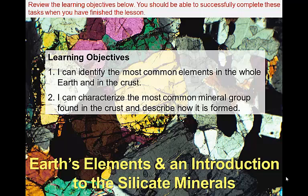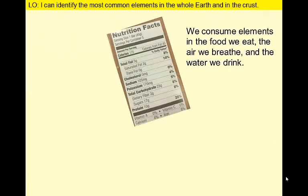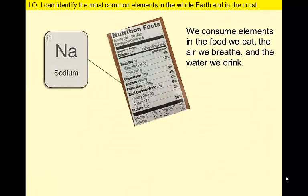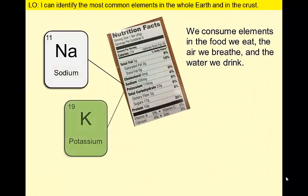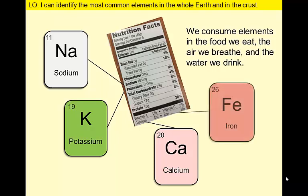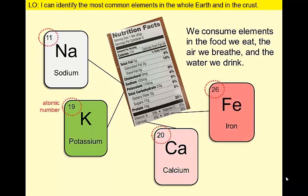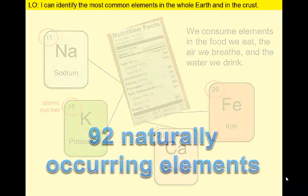We know that rocks are made of minerals, and minerals are composed of elements. Elements are the primary ingredients of all earth materials. We consume elements in the food we eat, the air we breathe, and the water we drink. Elements can't be separated into simpler substances by chemical means. There are 92 naturally occurring elements on Earth.